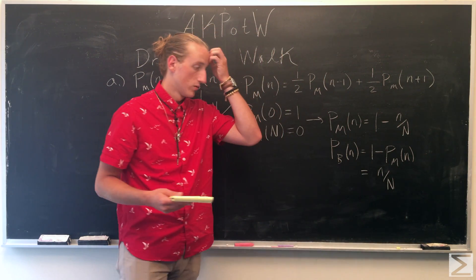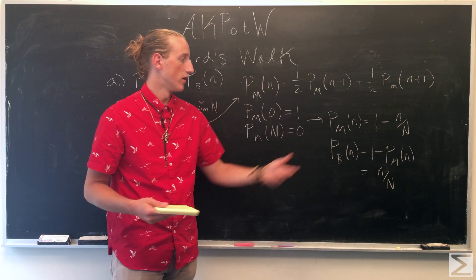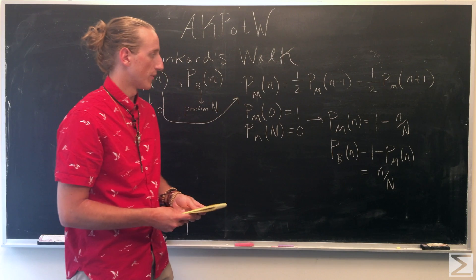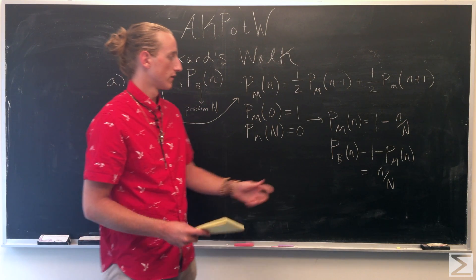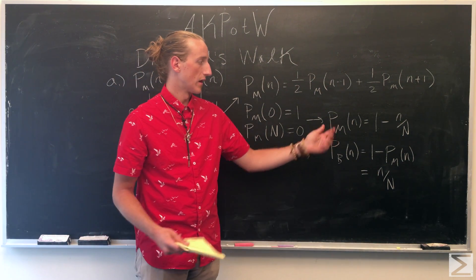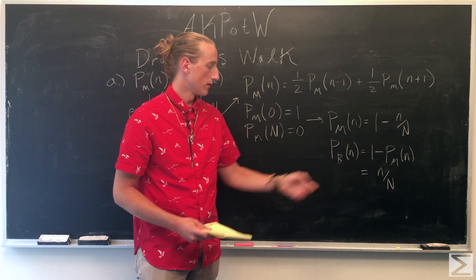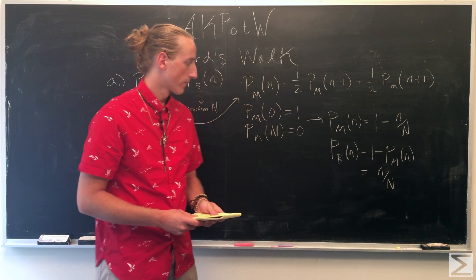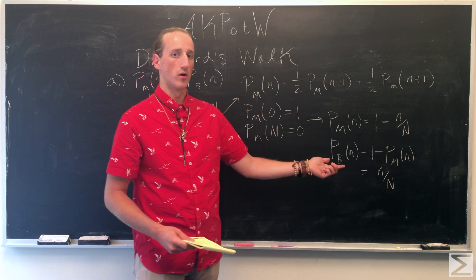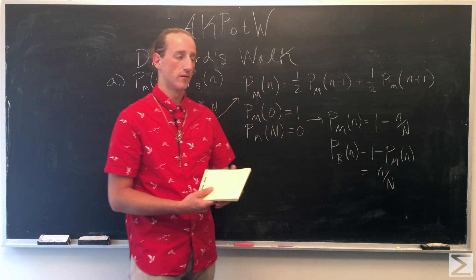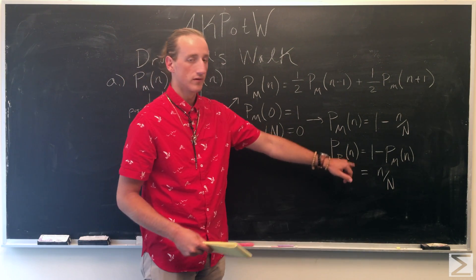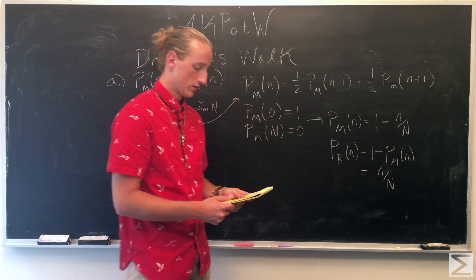So now we know the probability of ending up at McDonald's and the probability of ending up at the bar depending on the initial position little n.